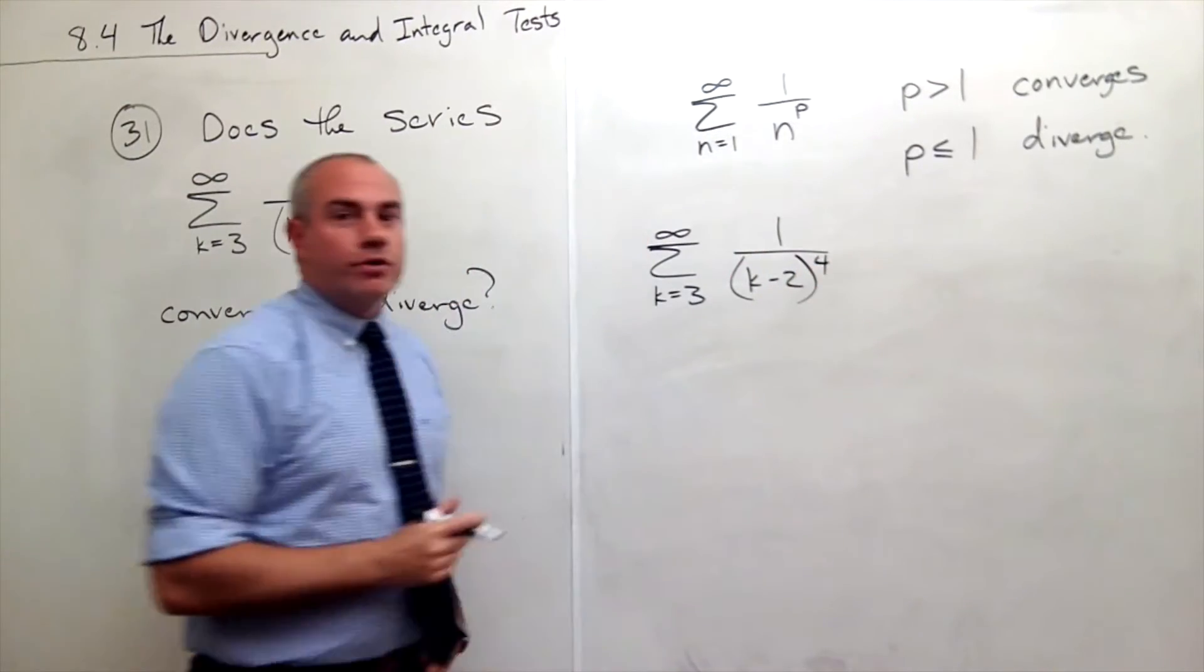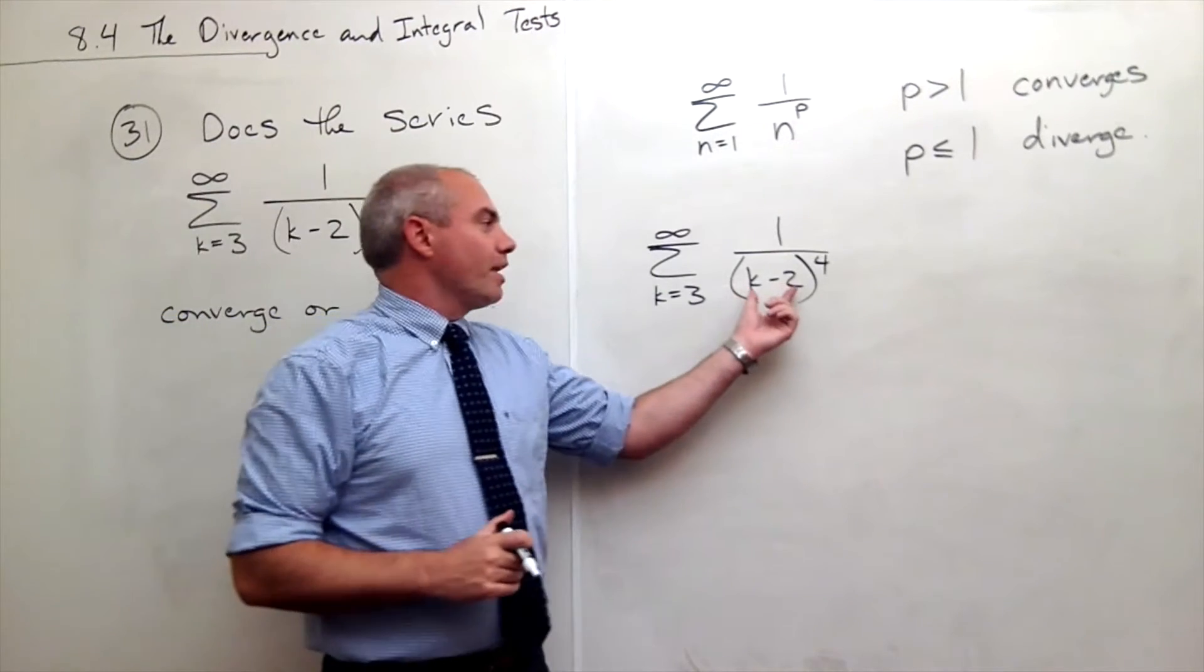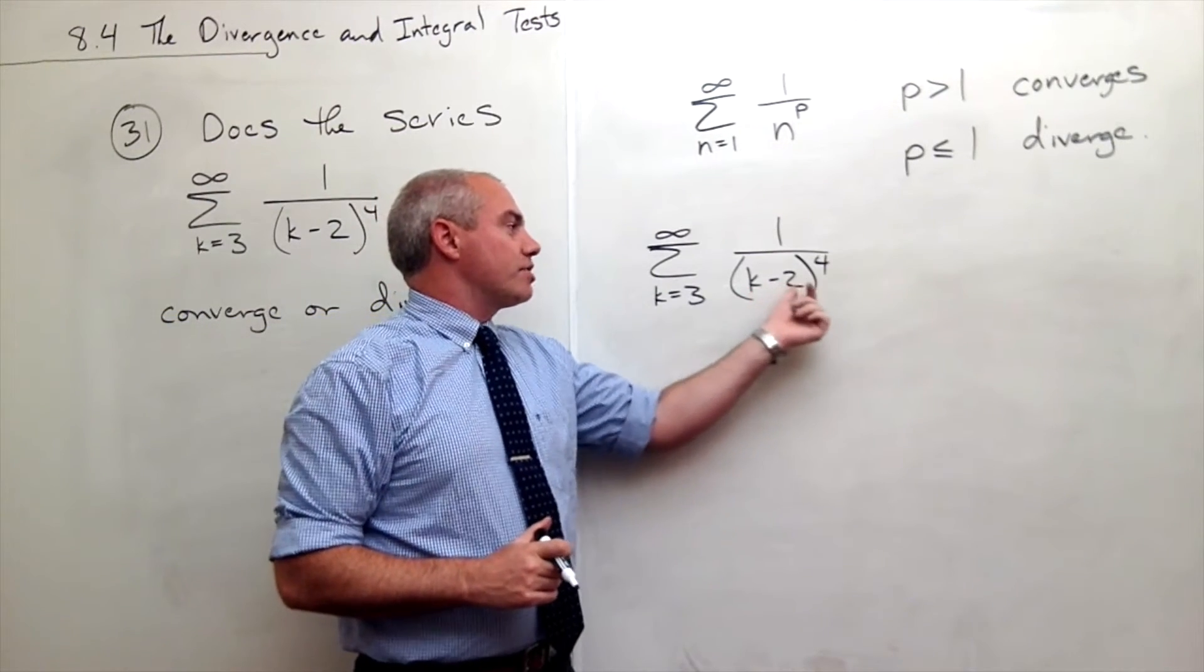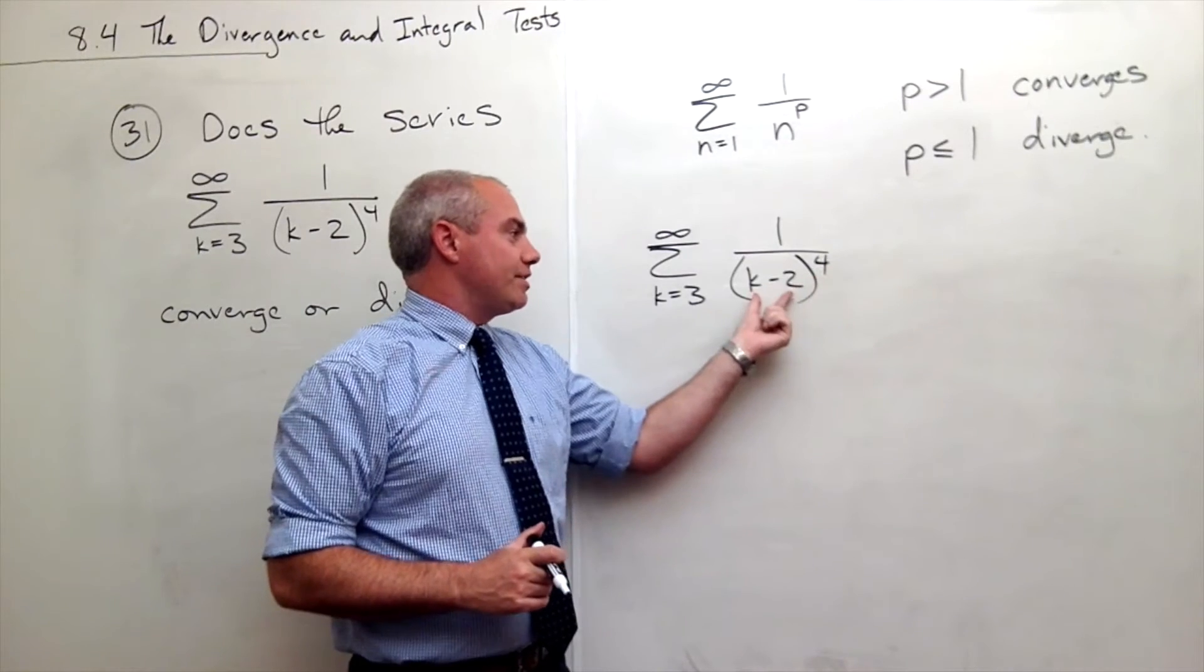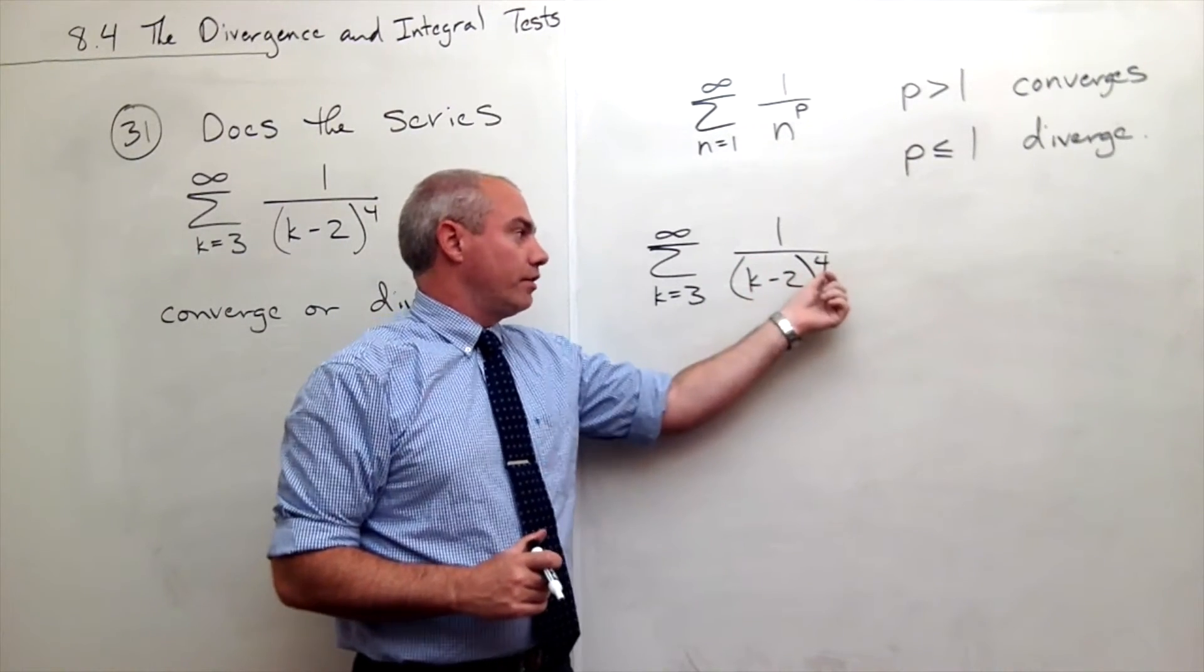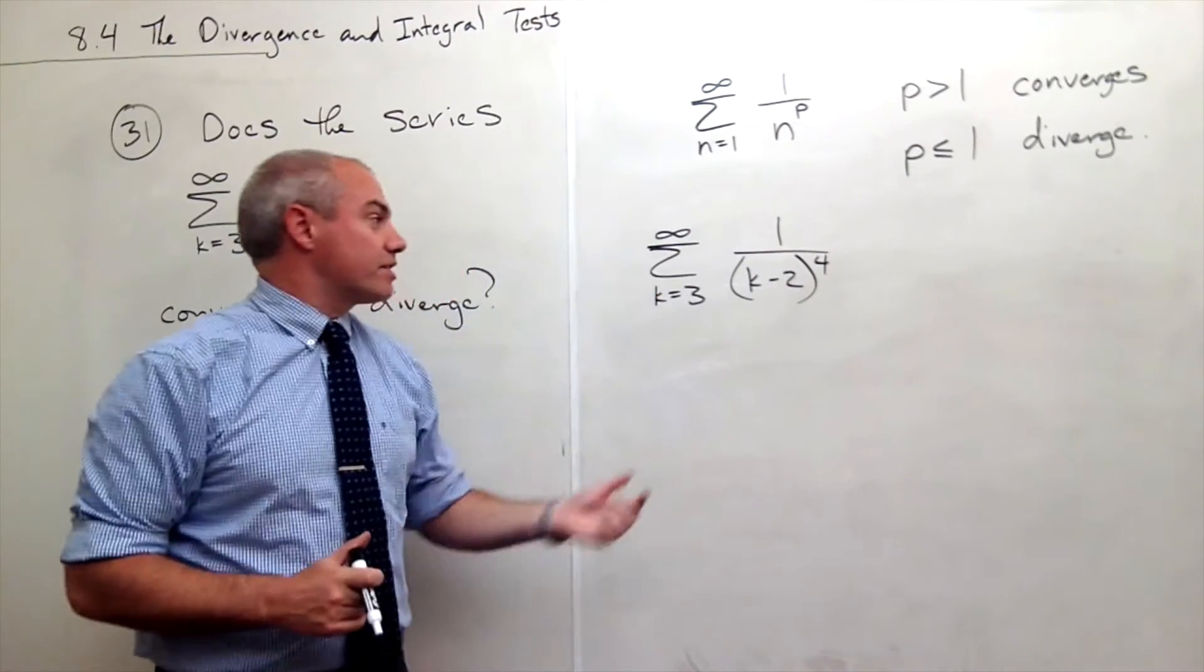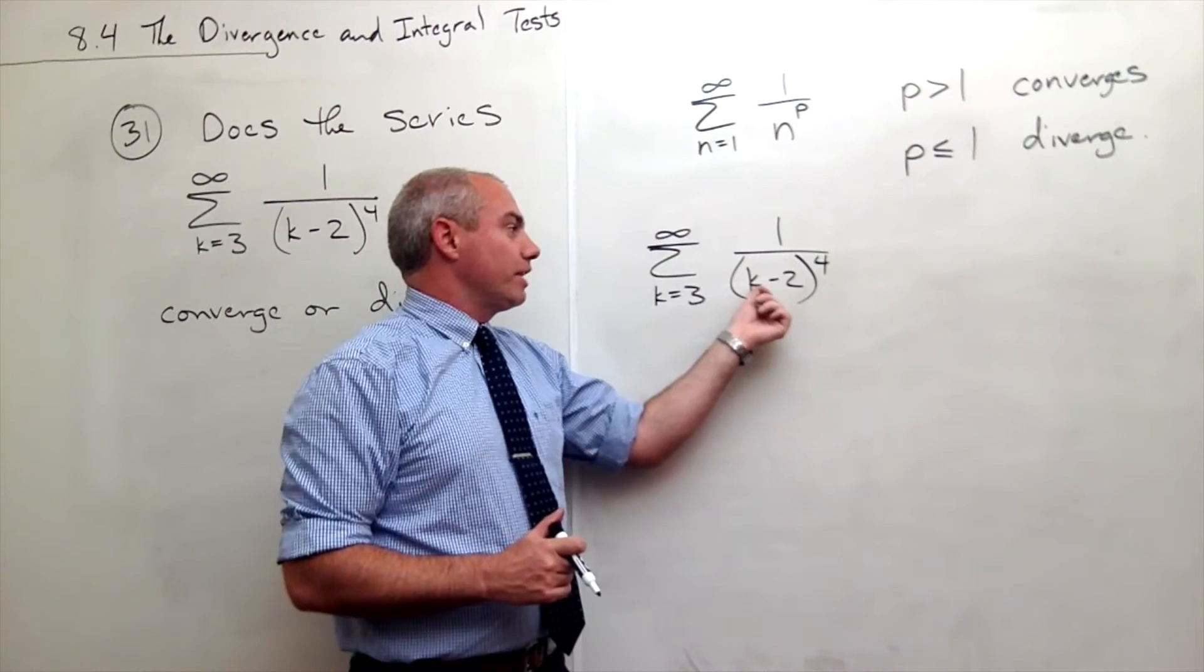And now I'm going to be a little bit tricky here. I've got k minus 2 to the 4th. I'd like it to just be one letter to the 4th. That would line up better with my p-series. So why don't I just let n be equal to k minus 2?